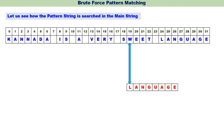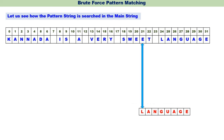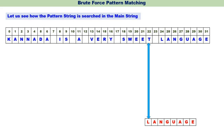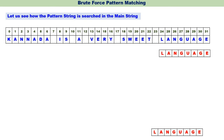L and W are compared — no matching, shift right by one. L and E — no matching, shift right. L and E (different E) — no matching, shift right. L and T — no matching, shift right. L and blank are compared — no matching, therefore the pattern is shifted to the right by one. Now, after a long time, L and L are matching — first time L and L are matching!